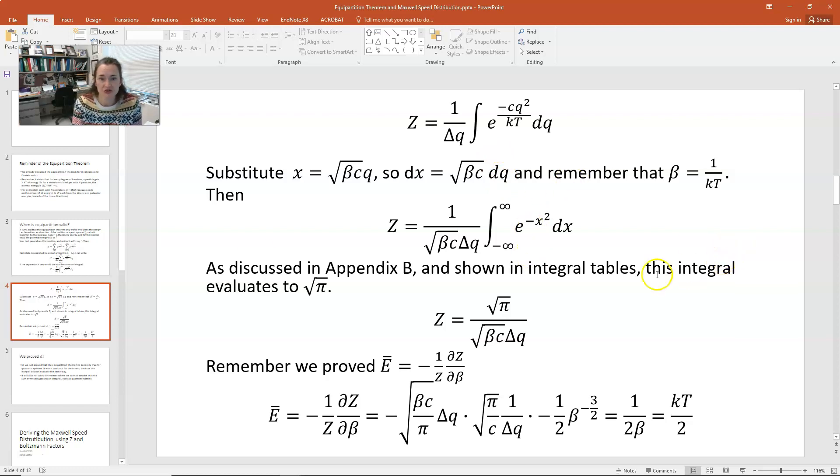So if we solve, dq could be written as dx divided by the square root of beta c. And if we plug that in, then we have our substitution complete. So z would be equal to 1 over the square root of beta c times delta q times the integral from minus infinity to infinity of e to the minus x squared dx. Now, in Schroeder's text, they show that this integral, minus infinity to infinity of e to the minus x squared dx, evaluates to the square root of pi. You might also cover this integral in some of your calculus classes, but as this is not a calculus lecture, I'm not going to derive it, and I'm going to present that without proof. So that integral evaluates to square root of pi. Plugging in for the evaluation of that integral, we have z is equal to the square root of pi divided by the square root of beta c times delta q. So now we have our partition function.